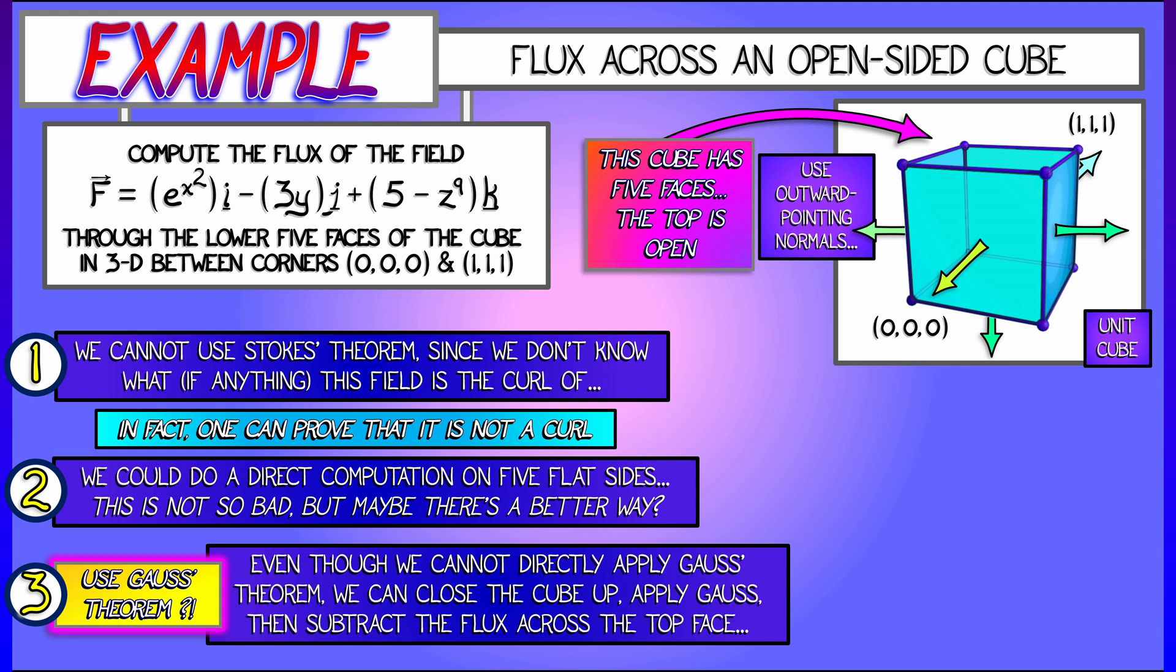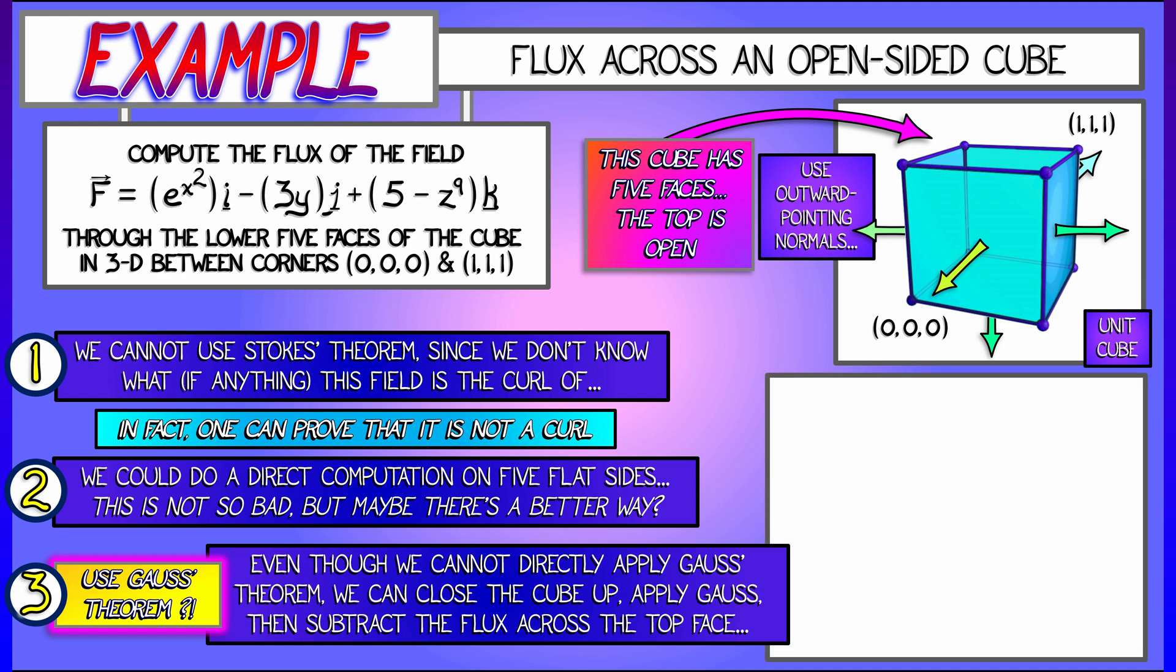and then subtracting off the flux that comes through that missing top face. Now, that's going to require doing one surface integral across that top face, but that's not bad because the normal vector to that is K.